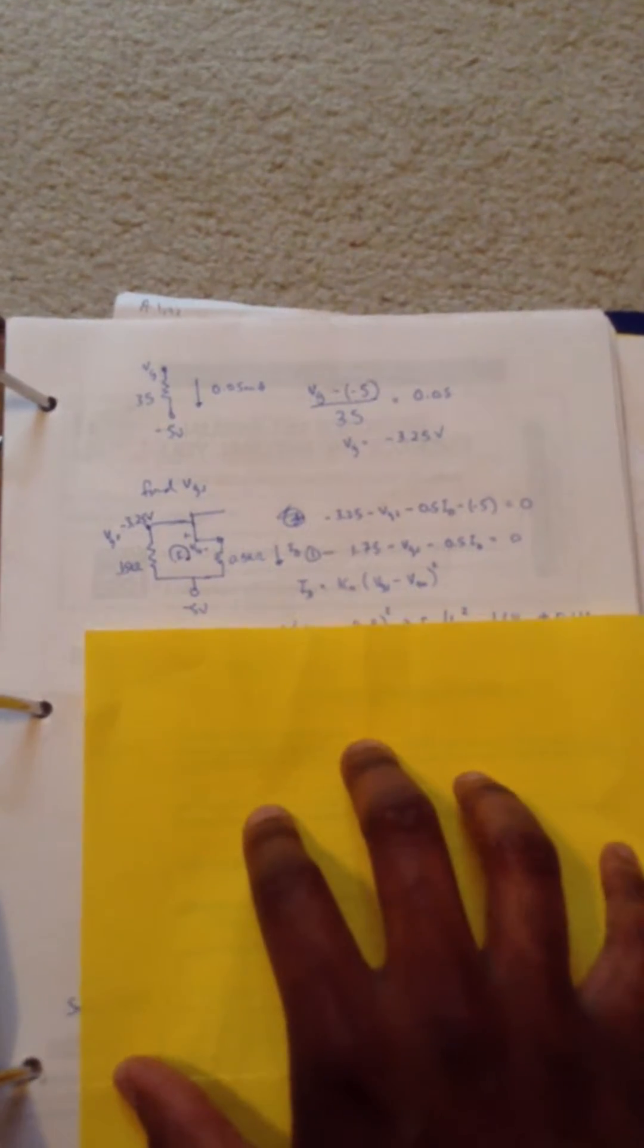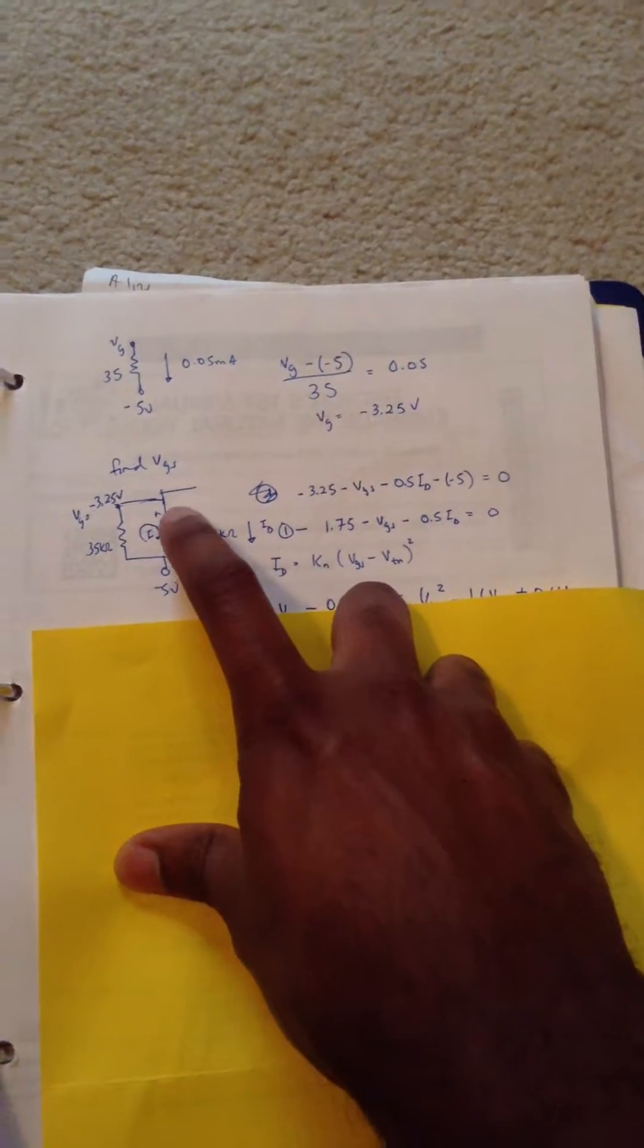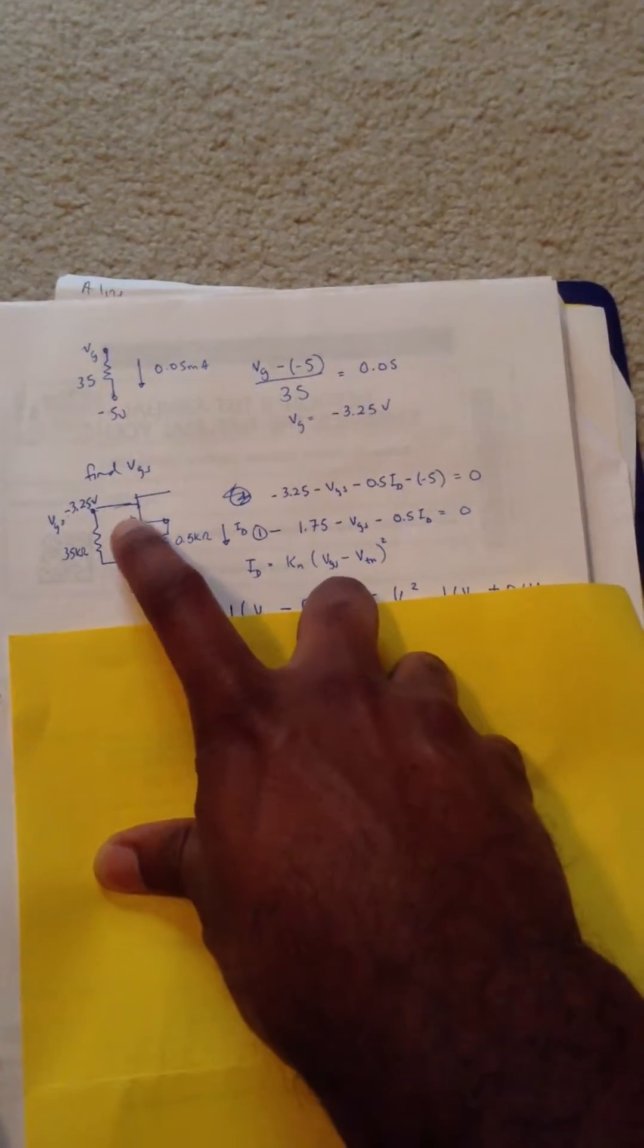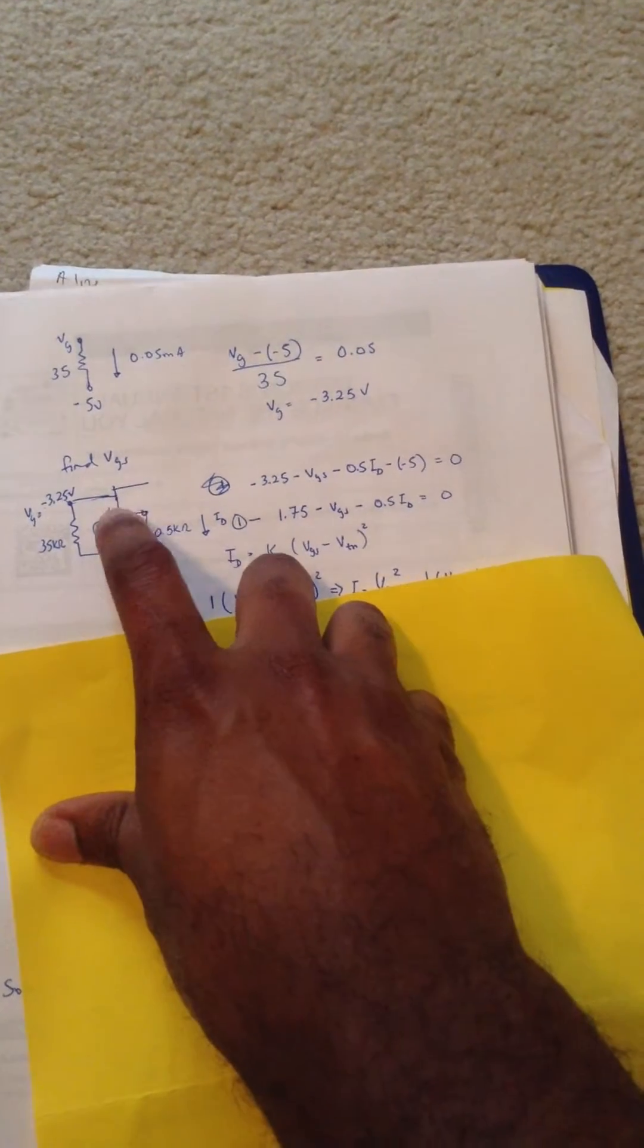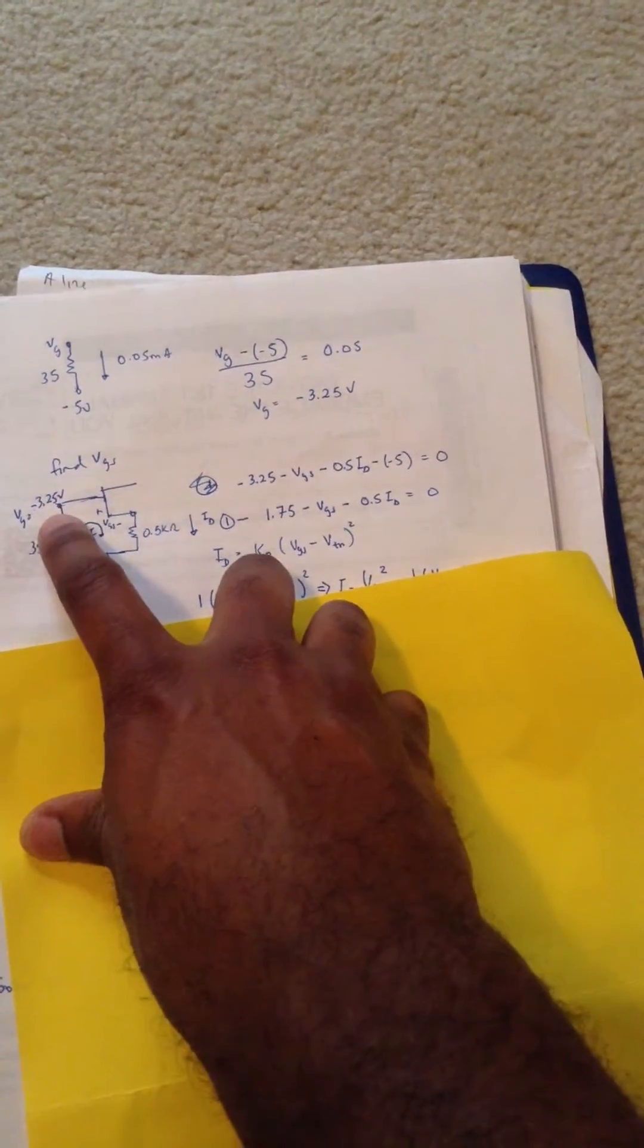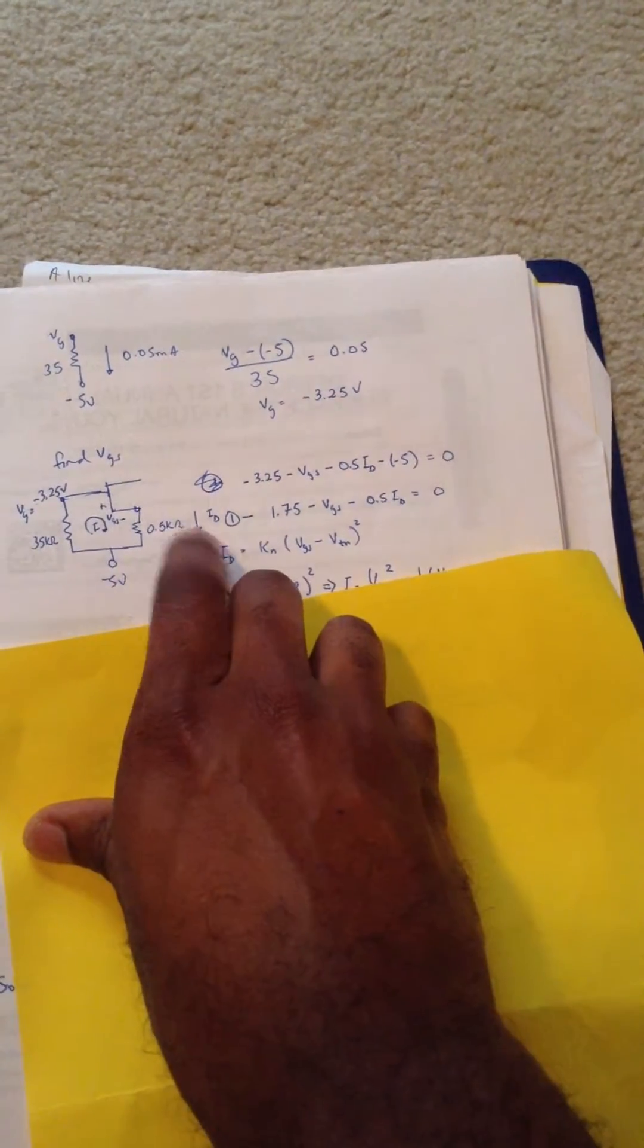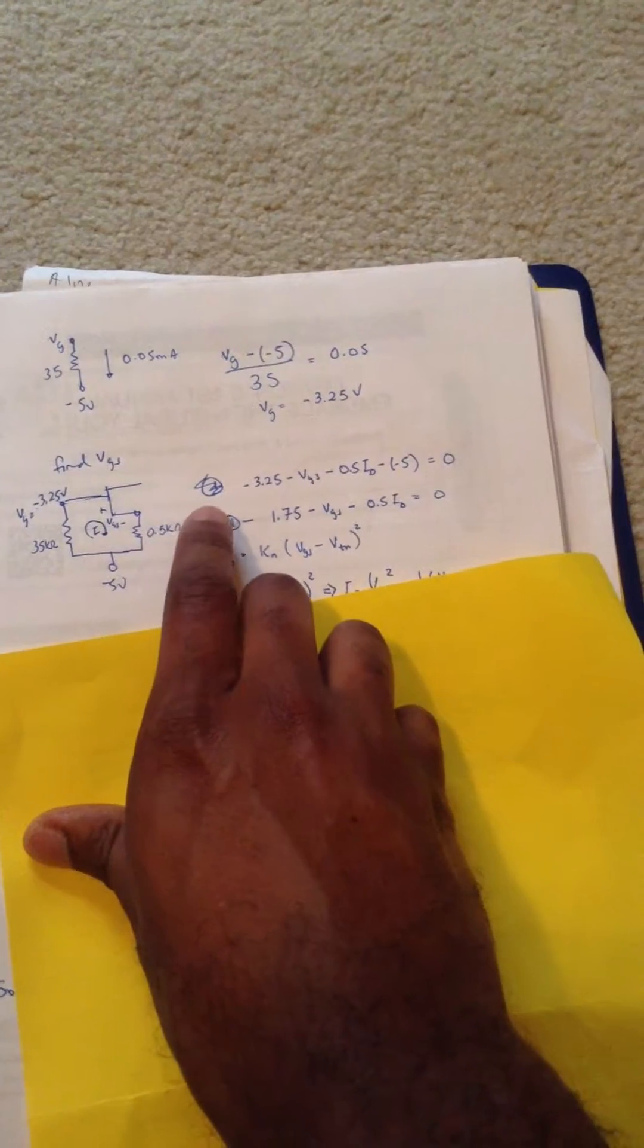Now we have to solve for VGS, which we're going to use circuit analysis again. Taking the bottom half of the circuit, we can use KVL again. We have VGS, it's unknown. We have VG and ID is unknown. So we're going to use KVL on that loop.